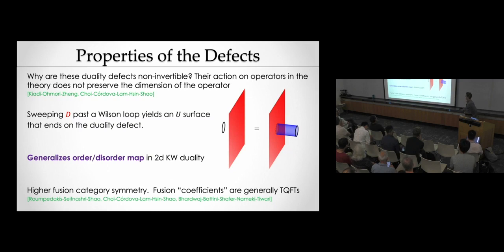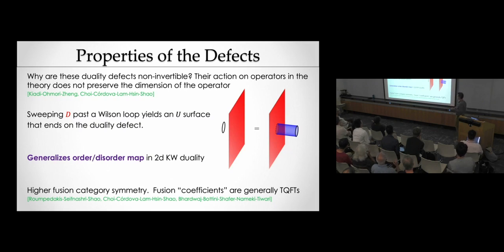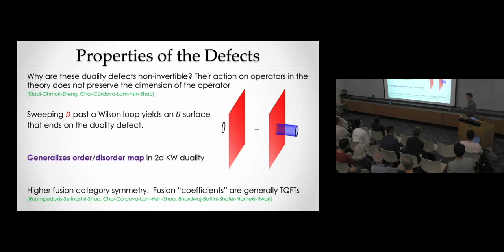The order-disorder map: there's a familiar fact in 1+1D Kramers-Wannier duality that acting with Kramers-Wannier duality on an order operator gives a disorder operator. There's a general version of that in the 3+1D case: if we have a Wilson loop and move this duality defect past it, it doesn't stay as a loop operator but instead gets dressed with a topological surface. That's a higher analog of the order-disorder map in the 1+1D Ising model.